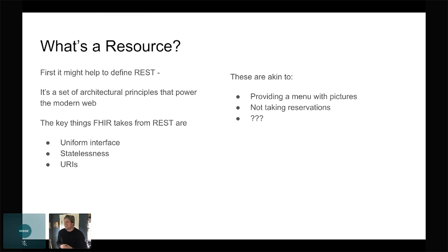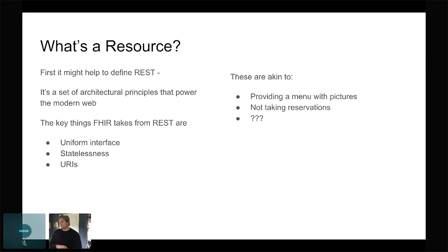Statelessness is another key architectural principle of REST, where the server doesn't necessarily have to know anything about the client between requests. For example, if I'm admitting a patient and that's a two-step process, the server admitting the patient shouldn't have to keep track between steps. Everything should be self-contained — the app pushing the data needs to provide all the context needed to do the action. In a restaurant world, this is like not taking reservations: you're more exclusive, but you don't have the extra infrastructure. You're not taking down dietary preferences, so your chef just makes whatever they want.